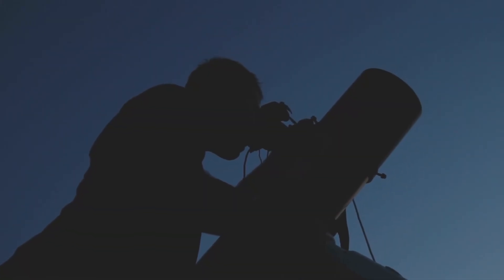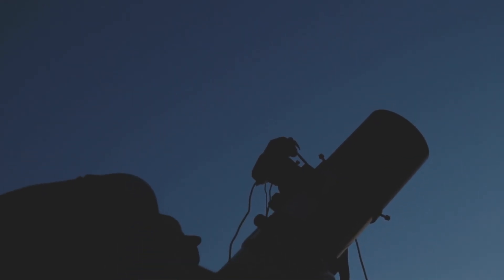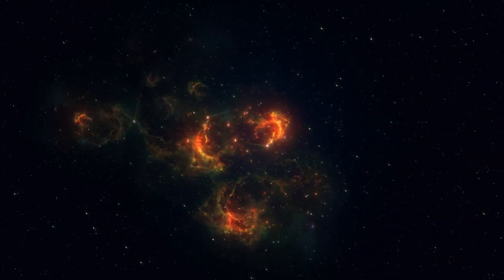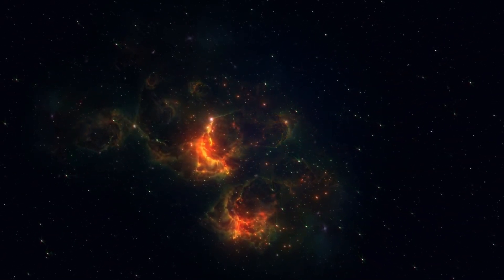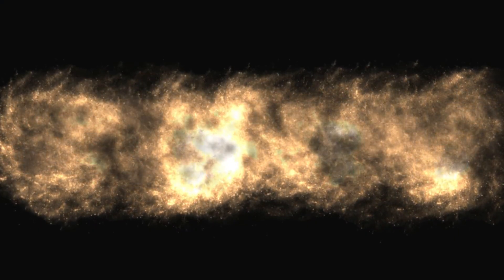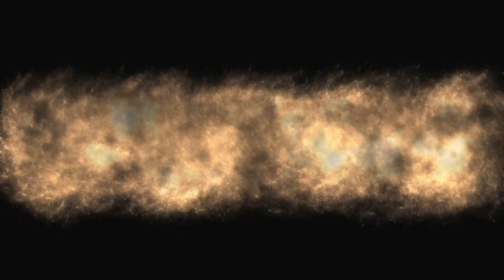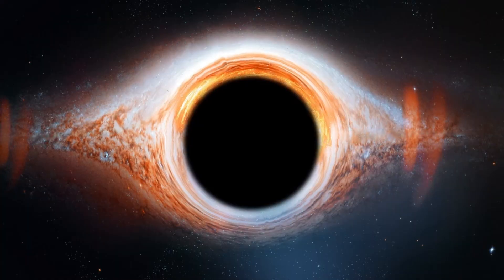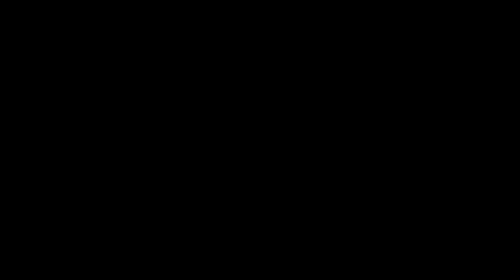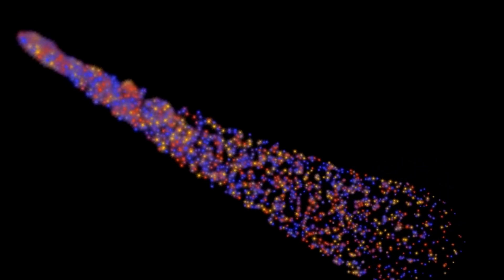For decades, astronomers thought of the early universe as a relatively quiet, predictable place. Sure, it was hot and dense right after the Big Bang, but once it cooled enough for the first stars to form, the standard model suggested a gradual, orderly buildup of structure. Small galaxies would merge over hundreds of millions of years to become bigger ones. Black holes would begin as tiny seeds and grow steadily over eons. But the extreme properties of GNZ-11 suggest that the early universe was anything but tranquil.